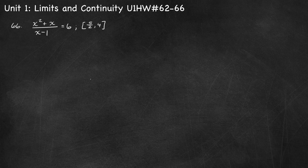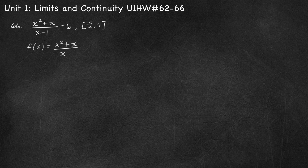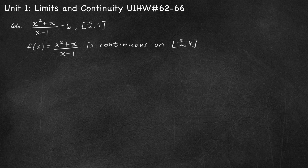Problem 66: determine whether the IVT can be used to show x squared plus x over x minus 1 equals 6 on the interval from 5 halves to 4, and if so, find the value of c. This is not a polynomial — it has a discontinuity at x equals 1. However, 1 is not in our interval, so that's okay. We need the function to be continuous from 5 over 2 to 4. So f of x equals x squared plus x over x minus 1 is continuous on the closed interval from 5 over 2 to 4, since the only discontinuity is at x equals 1.